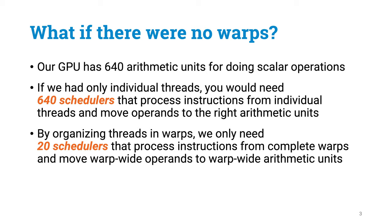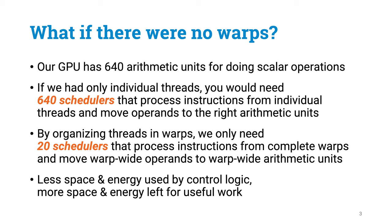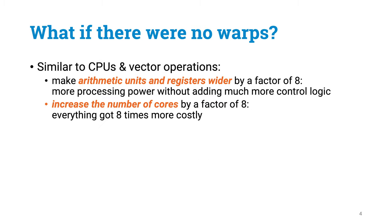By organizing threads in warps of 32 threads, the GPU only needs to find at each clock cycle 20 warps that are ready for execution. So instead of 640 scheduling units that find instructions from individual threads, you only need 20 scheduling units that find complete warps that are ready for execution. One piece of circuit puts 32 similar arithmetic operations into arithmetic units in one step. We could potentially save power consumption and space usage related to control logic by almost a factor of 32. Most of the GPU can be arithmetic units instead of control logic. This is very similar to the reason why CPUs have 8-wide vector units instead of just increasing the number of cores by a factor of 8. You can add more processing power without adding more control logic. So warps help with hardware design.